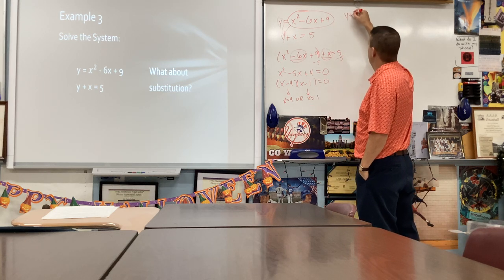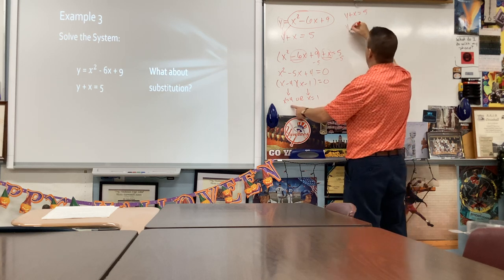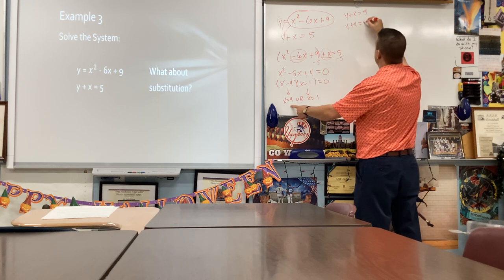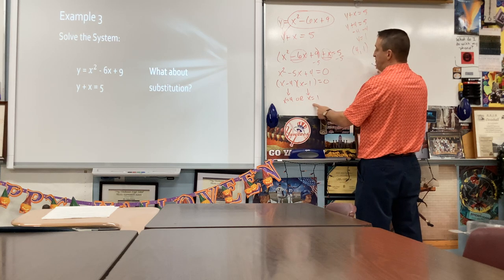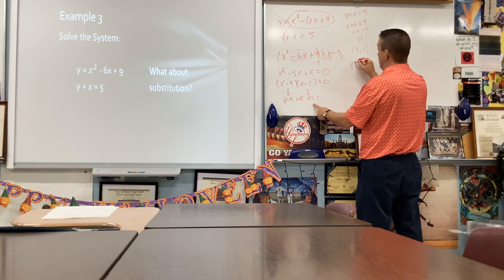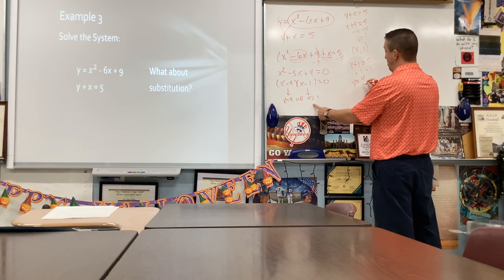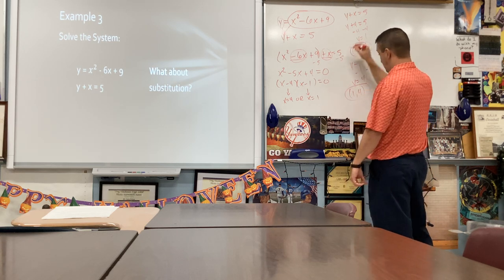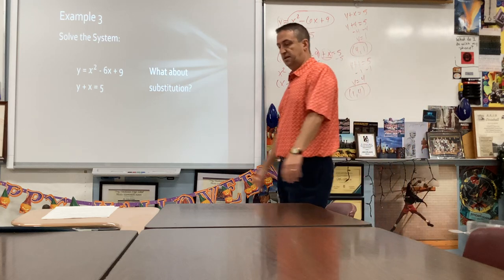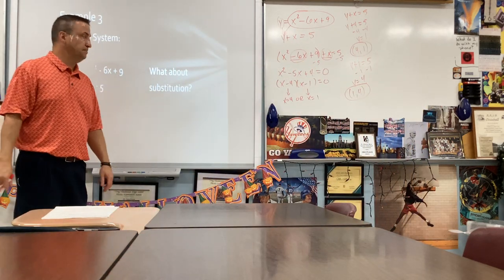I'll plug into the bottom equation since there are fewer terms. For x equals 4: y plus 4 equals 5, so y equals 1. First ordered pair: (4, 1). For x equals 1: y plus 1 equals 5, so y equals 4. Second ordered pair: (1, 4). So our solutions are (4, 1) and (1, 4) — complete coincidence that those are mirrors of each other. That does not always happen with substitution.